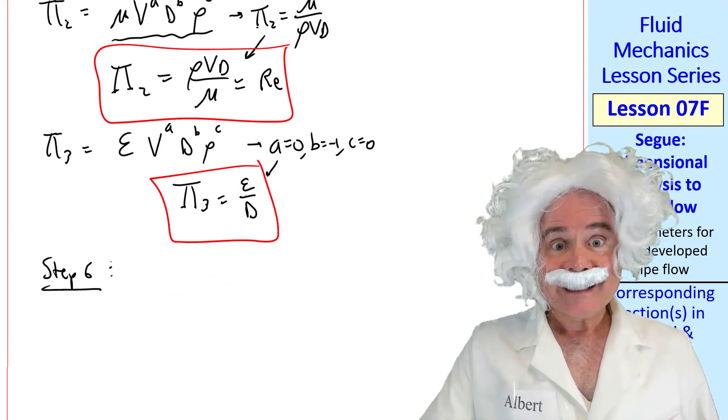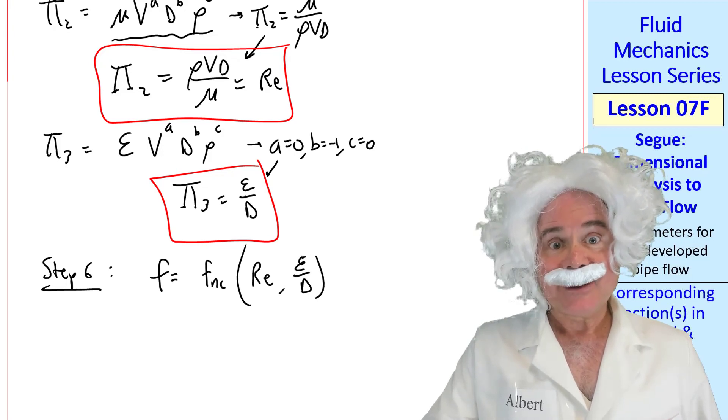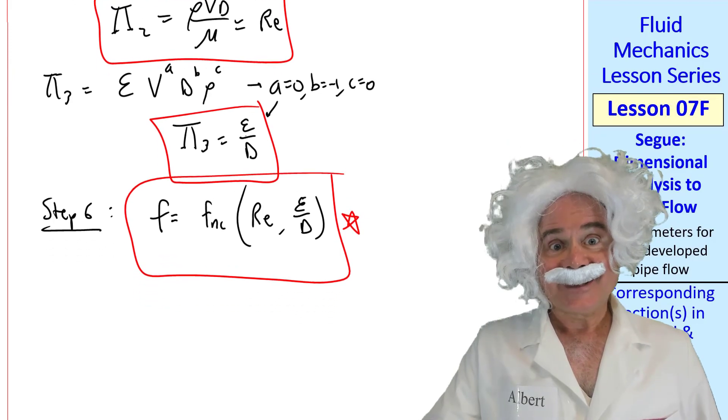Step six is to write the pi relationship. We write f equal function of Reynolds number and epsilon over d. Thank you, Albert. Yeah, this was fun.